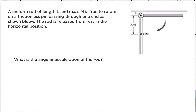This problem is about rotational dynamics. A uniform rod of length L and mass M is free to rotate on a frictionless pin passing through one end as shown. The rod is released from rest in the horizontal position. The rod is fixed on one of its ends and is free to rotate downward. What is the angular acceleration of the rod?